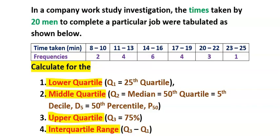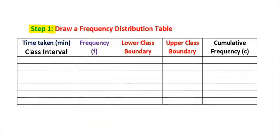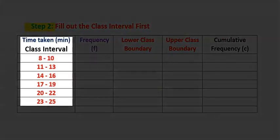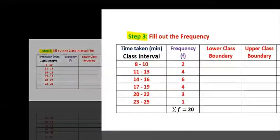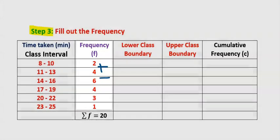Step number one: draw a frequency distribution table. Step number two: fill out the class interval. Step three: fill out the frequency, and sum up the frequencies, which totals 20.